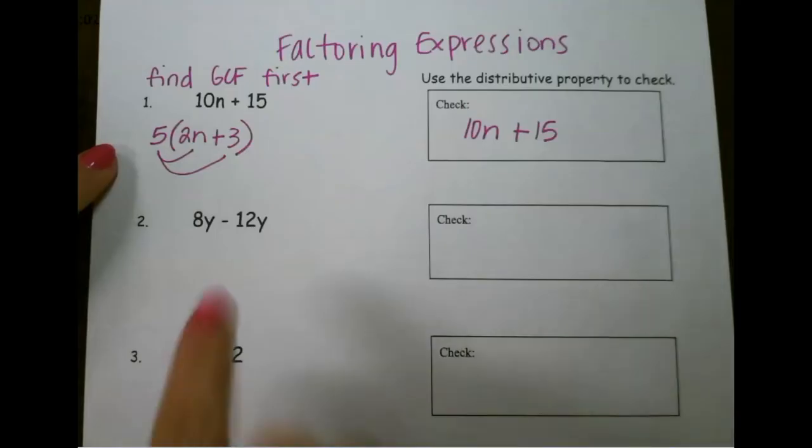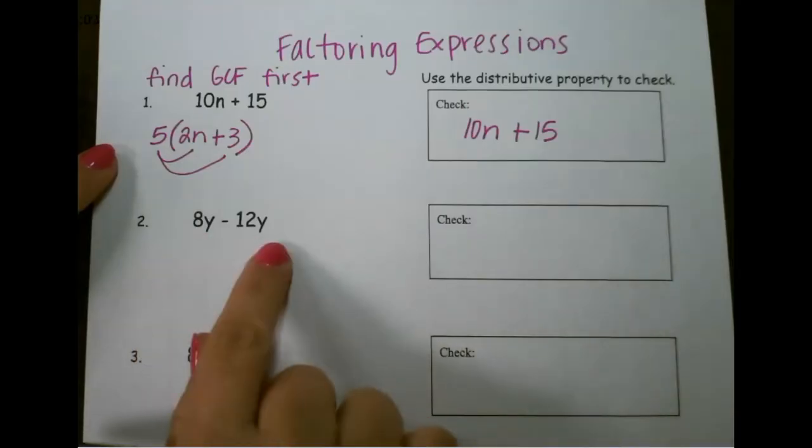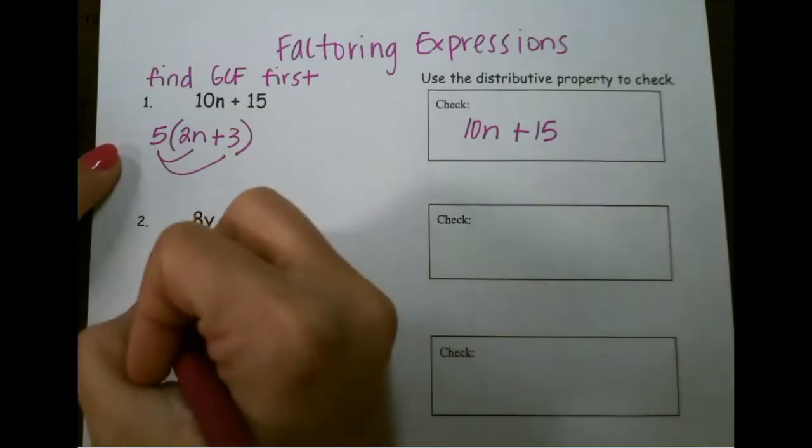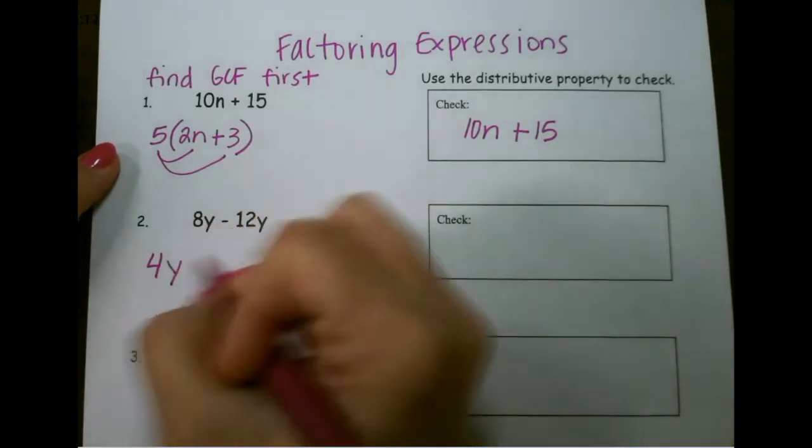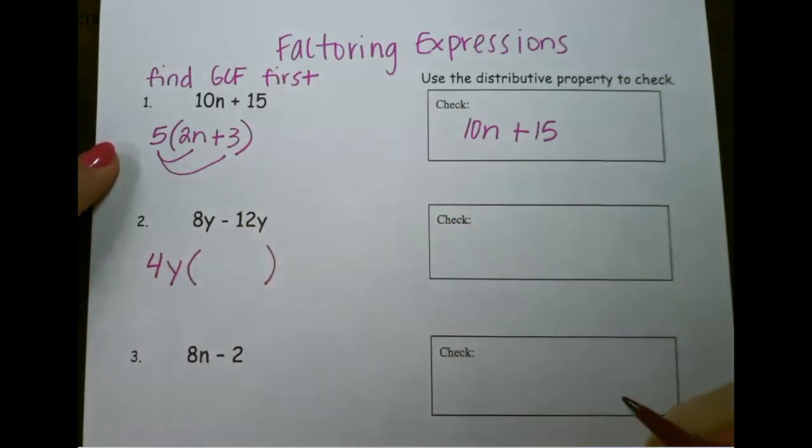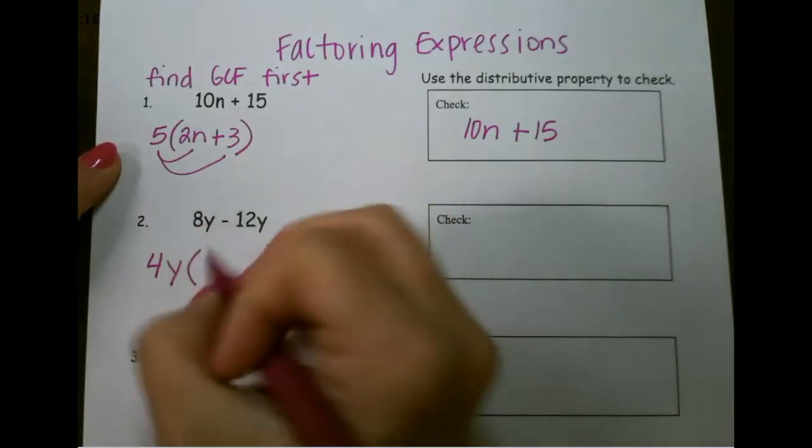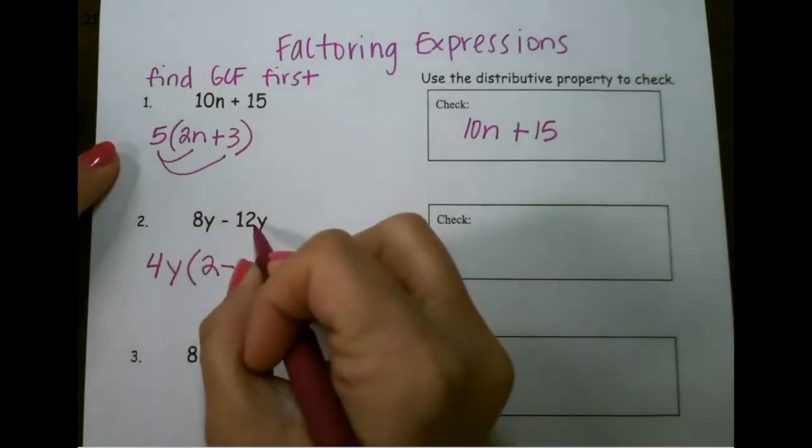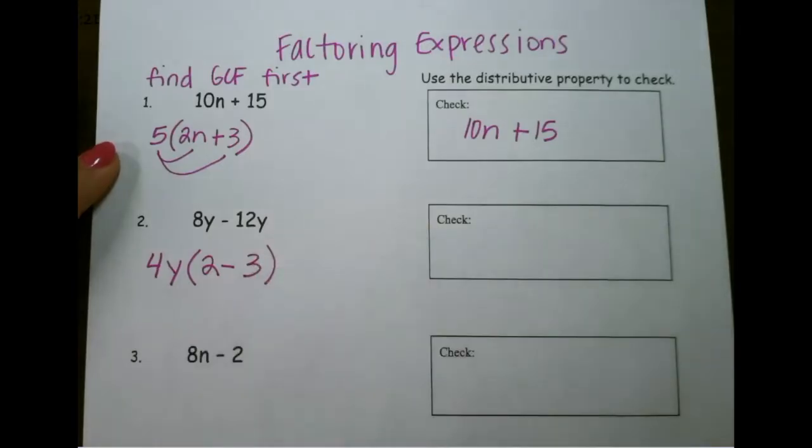On our next example, we have the same letter for both of them. So we have to pull that out as a common factor as well. The greatest common factor between 8 and 12 is 4. And since we have the same letter, we will pull that out as well. 4y times 2 will give me 8y, and 4y times 3 will give me 12y.